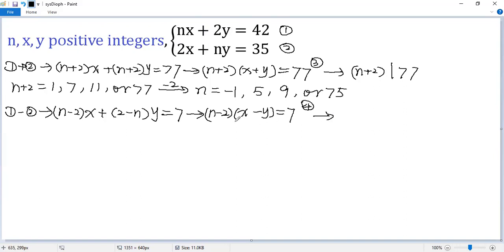So from this equation, we know n minus 2 is a factor of 7. So the possible values for n minus 2 would be 1 or 7, right? So both sides add 2. So we get n equals 3 or 9.